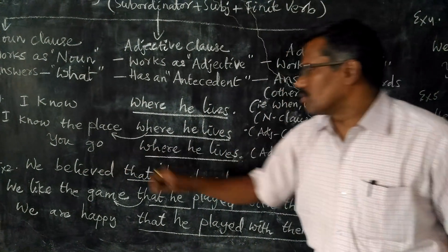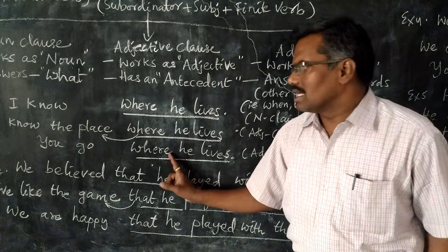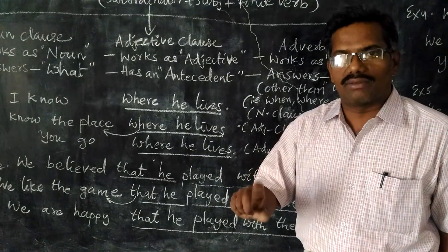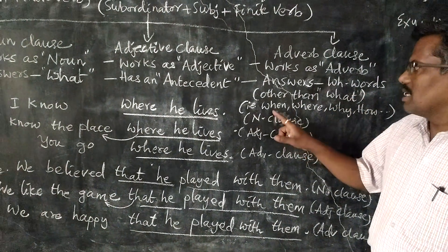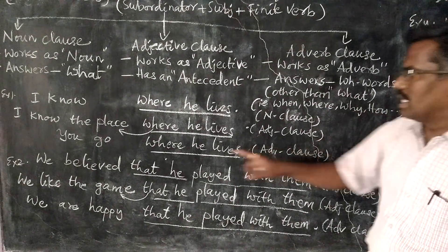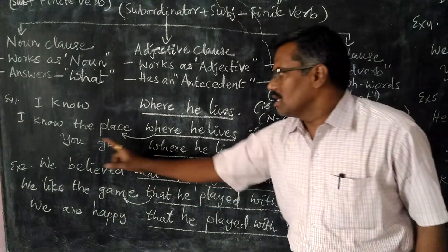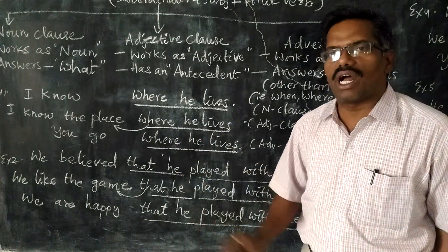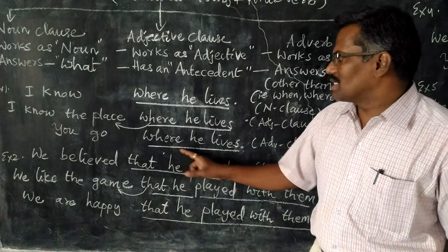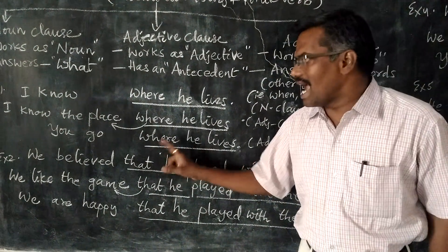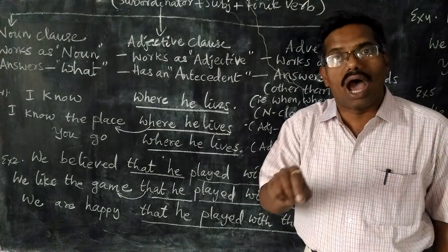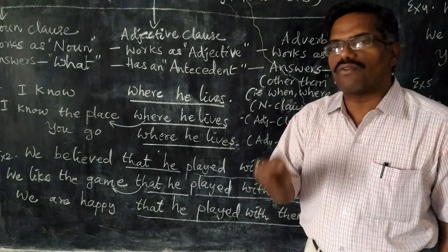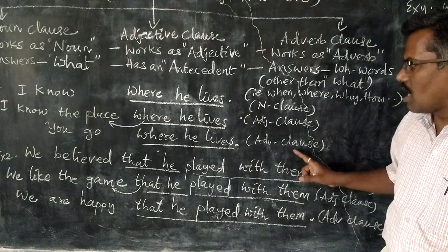Third: 'You go where he lives.' Here, this clause answers the question not 'what' but 'where,' which is a WH word other than 'what.' You go — where? Where he lives. So it answers the question 'where,' not 'what.' If it had answered 'what,' it would have been a noun clause. But since this clause answers 'where,' it is called adverb clause.